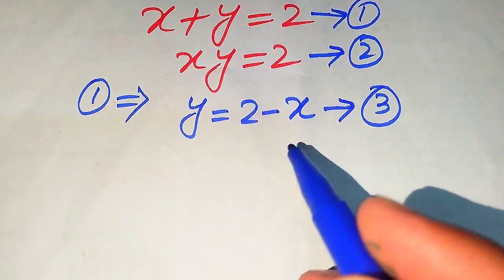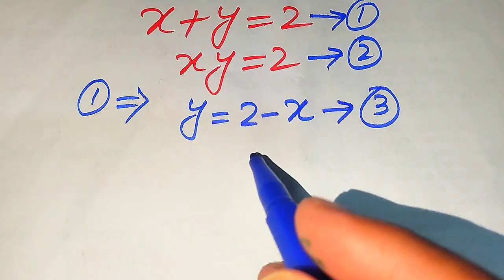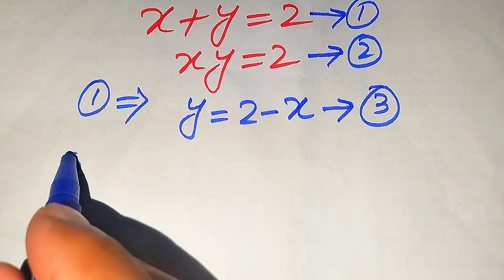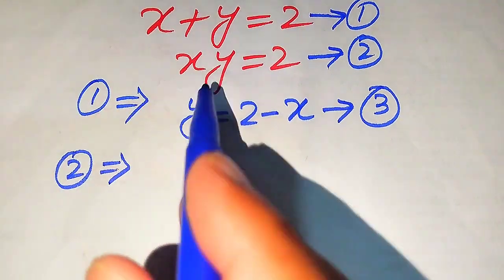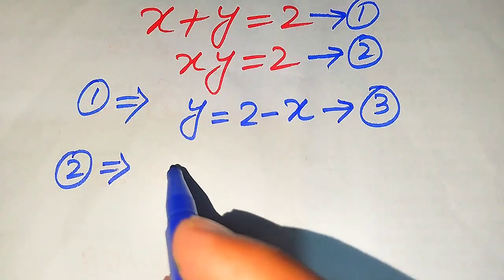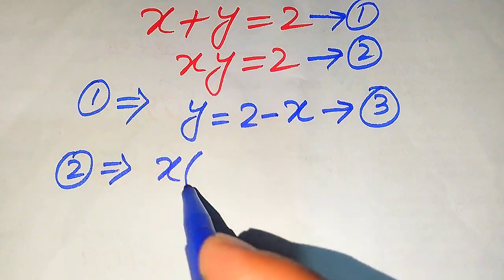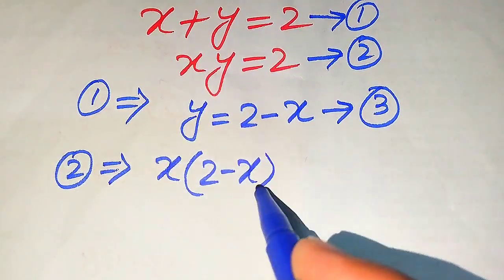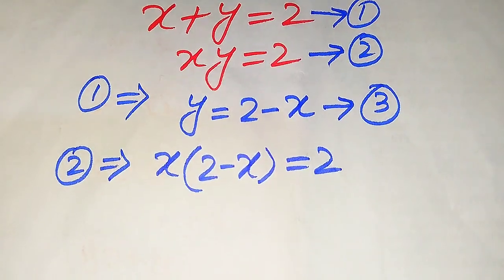We substitute this value from equation number 3 into equation number 2, so that equation number 2 implies x times y, and the value of y is 2 minus x, equals 2.